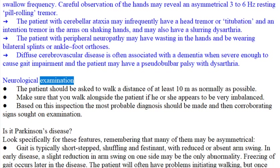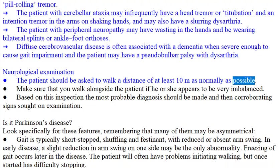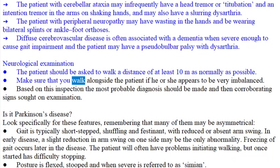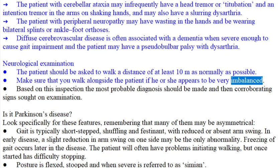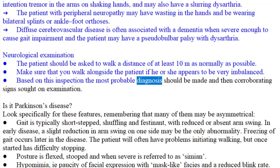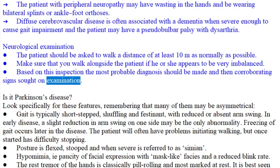Neurological examination. The patient should be asked to walk a distance of at least 10 m as normally as possible. Make sure that you walk alongside the patient if he or she appears to be very imbalanced. Based on this inspection the most probable diagnosis should be made and then corroborating signs sought on examination.